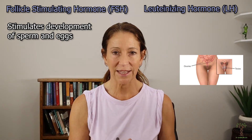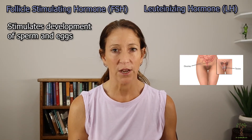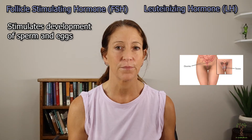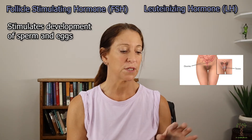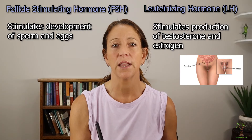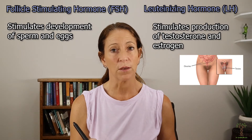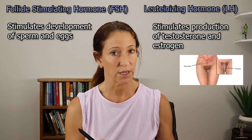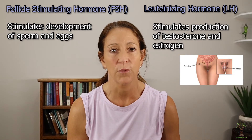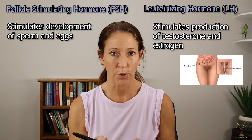FSH and LH both impact the gonads — testes in males and ovaries in females. Follicle stimulating hormone stimulates the development of sperm and eggs, stimulating spermatogenesis and oogenesis. Luteinizing hormone's primary role is to stimulate the production of other hormones — in the testes it stimulates the Leydig cells to produce testosterone. In females, luteinizing hormone stimulates the theca cells to make testosterone, which is then converted into estrogen because females have an enzyme called aromatase.